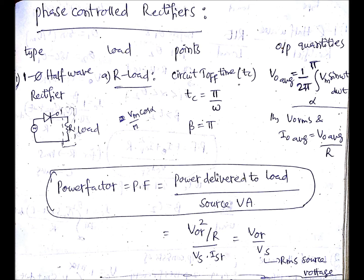The waveform is Vm sin(ωt), that's why we're considering it. Similarly, you can find out V0 RMS. Then, as it is R-load, I0 average will be V0 average divided by capital R.